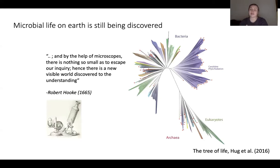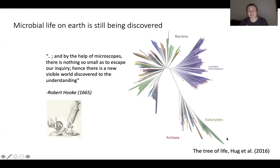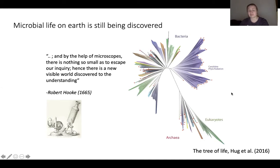The tree of life tells us how all living organisms are related to each other. As animals, we are down here at the bottom of the tree within the eukaryotes. But plants and animals represent a tiny, tiny fraction of this tree. Most of the diversity is generated by the bacteria up here at the top, and in fact many of the branches have only been discovered during the last 10 years.